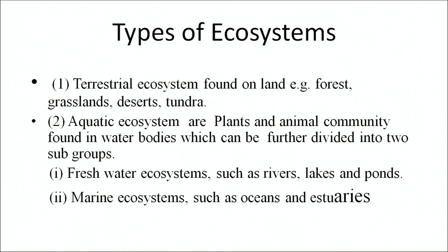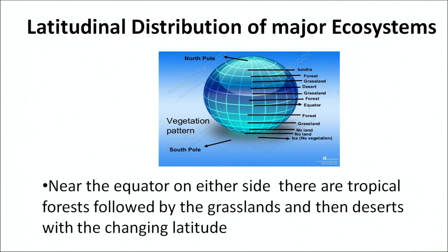The terrestrial ecosystems are found on the land — for example, forests, grasslands, deserts and tundra. Aquatic ecosystems are plants and animals found in water bodies, which can be further divided into two subgroups: the freshwater ecosystems such as rivers, lakes and ponds, and marine ecosystems such as oceans and estuaries. Near the equator on either side, there are tropical forests followed by the grasslands and then deserts with changing latitude. As the latitude changes, subsequently there is a change from deserts to boreal forests at higher latitudes. Near the poles, it is the tundra biome that contains very limited fauna and flora due to harsh climatic conditions.